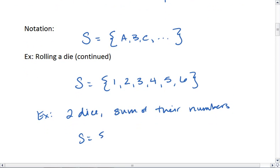Then we get 3, 4, 5, 6, 7, 8, 9, 10, 11, all the way up to a 6 plus a 6, which is 12. The sample space is just what possible outcomes could we have. It's a listing of everything that could happen.